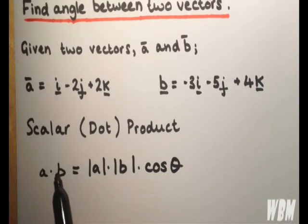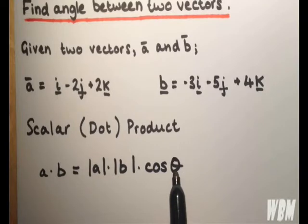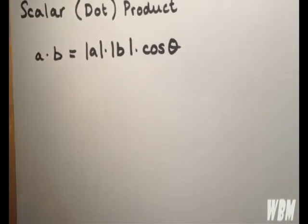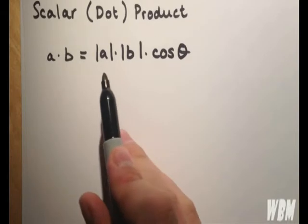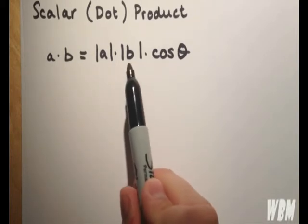Now we can work this value out. So what we want to do is rearrange it to get it in terms of theta. So we're going to divide throughout by magnitudes of a and b.